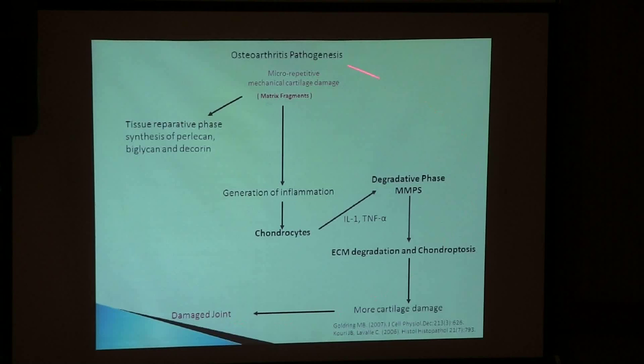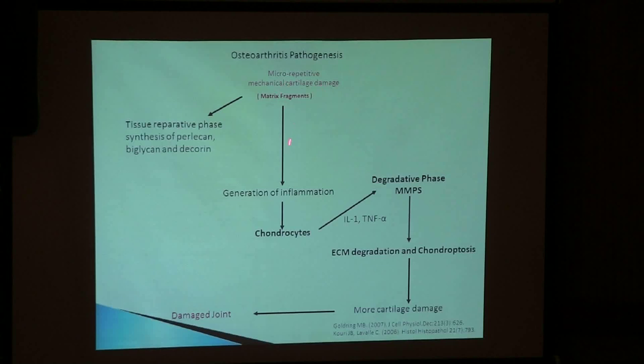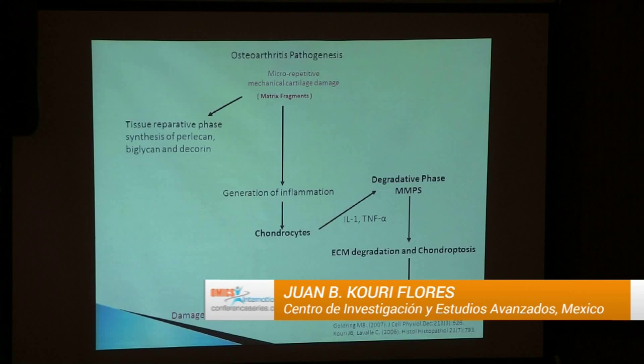After that, Goldring, taking this idea, also presented and published the same hypothesis schematically — mechanical articular damage, tissue repair that doesn't continue, then matrix degradation, generation of inflammation, chondrocytes, interleukins, cytokines, degradative phase, and chondroptosis leading to more damage to the cartilage. So that's the hypothesis we are working with.